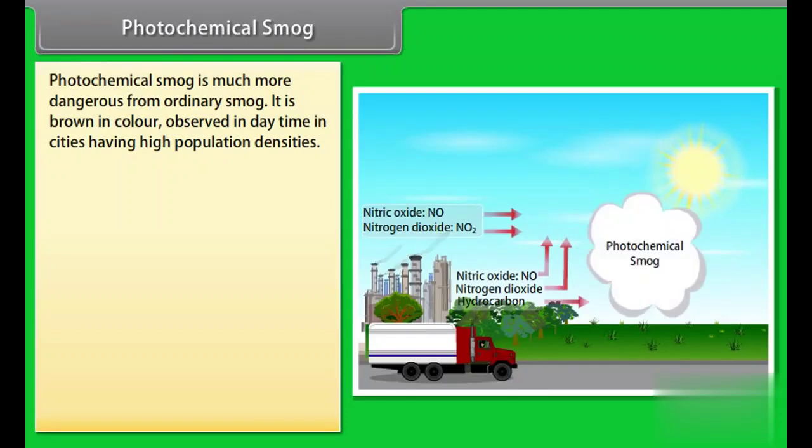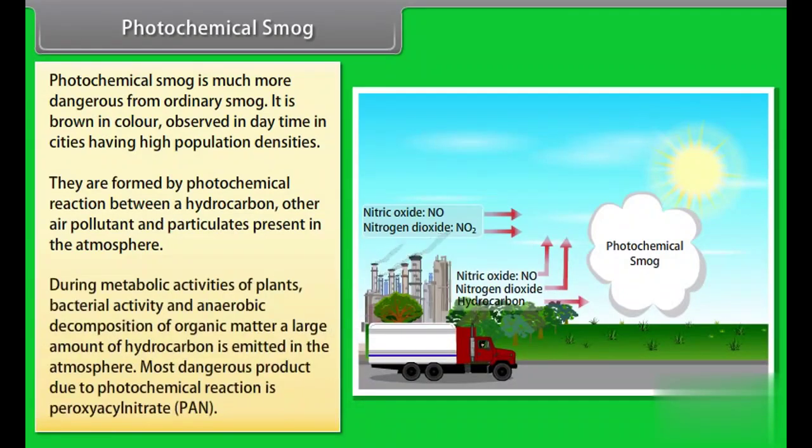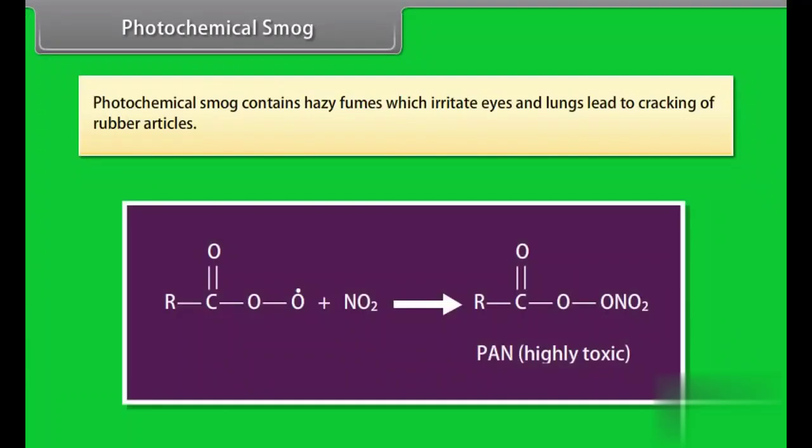Photochemical smog is much more dangerous than ordinary smog. It is brown in color, observed in daytime in cities having high population densities. They are formed by photochemical reaction between a hydrocarbon, other air pollutant, and particulates present in the atmosphere. During metabolic activities of plants, bacterial activity, and anaerobic decomposition of organic matter, a large amount of hydrocarbon is emitted into the atmosphere. Most dangerous product due to photochemical reaction is peroxyacyl nitrate, PAN. Photochemical smog contains hazy fumes which irritate eyes and lungs, and lead to cracking of rubber articles.